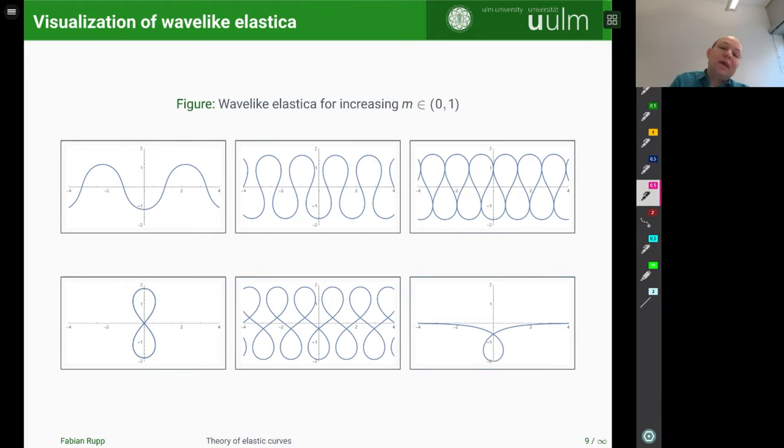And as now m slowly increases towards the second picture, what we get is that we get more curves, so it curves more, and it becomes more bumpy. And as m further increases, the bumps suddenly start to overlap. So at first they touch and then they overlap.